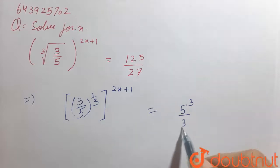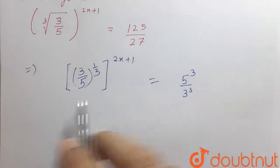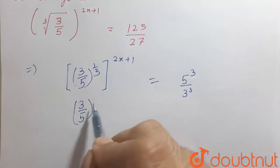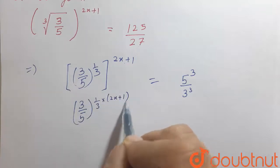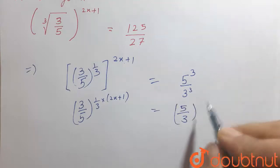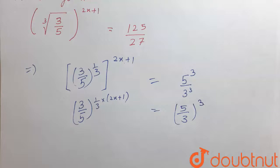So here, power to power multiply. So this becomes (3/5) raised to the power 1/3 times (2x plus 1), and this becomes (5/3) raised to the power 3.